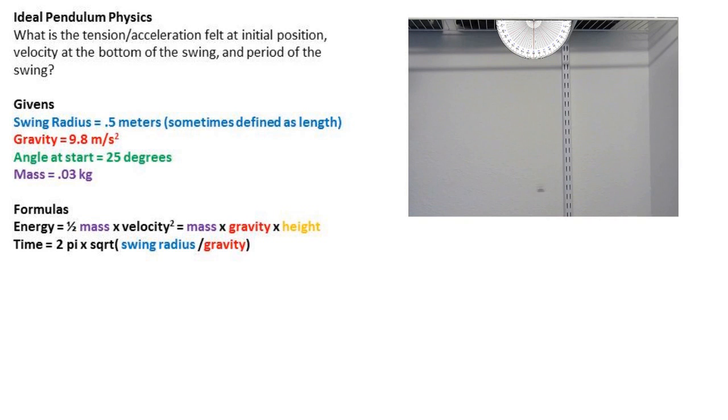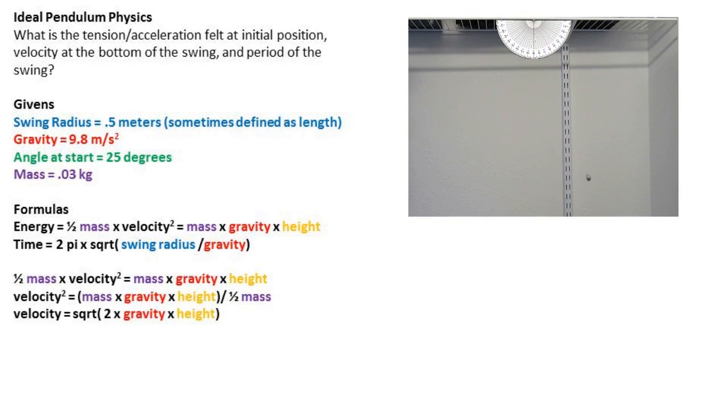To solve for the velocity, let's set the two energy equations equal to one another. We can then isolate the velocity to one side, and we notice that the masses can be canceled out. After doing a little bit more simplification, we find that the velocity equals the square root of two times gravity times height.